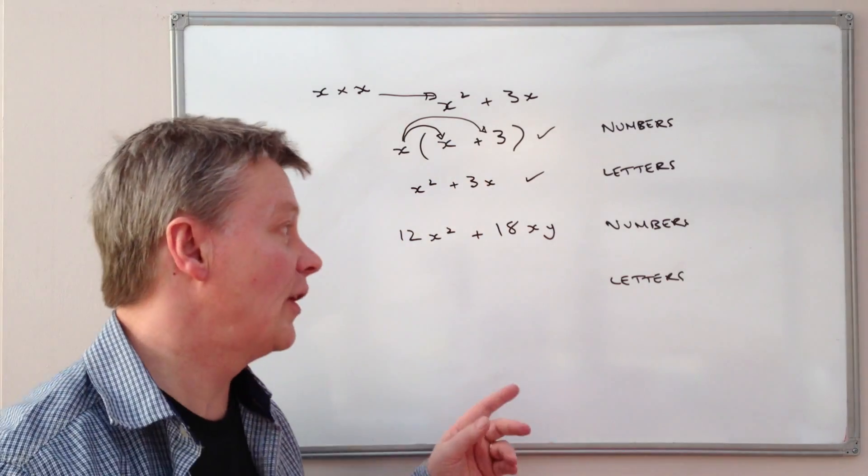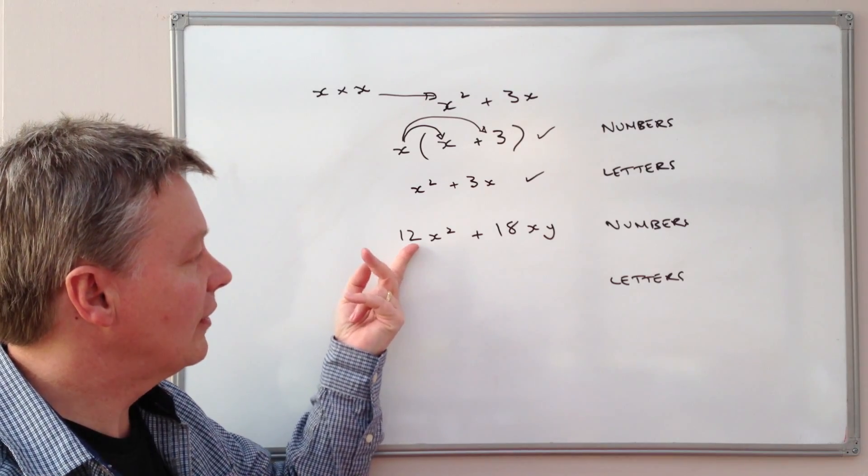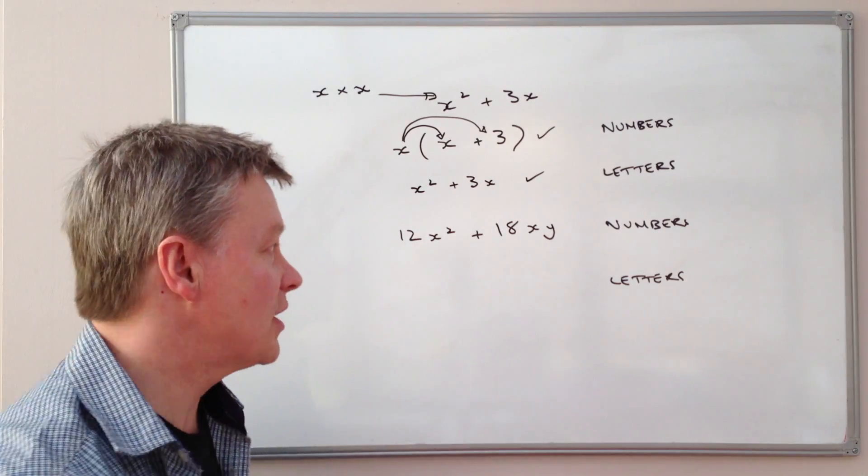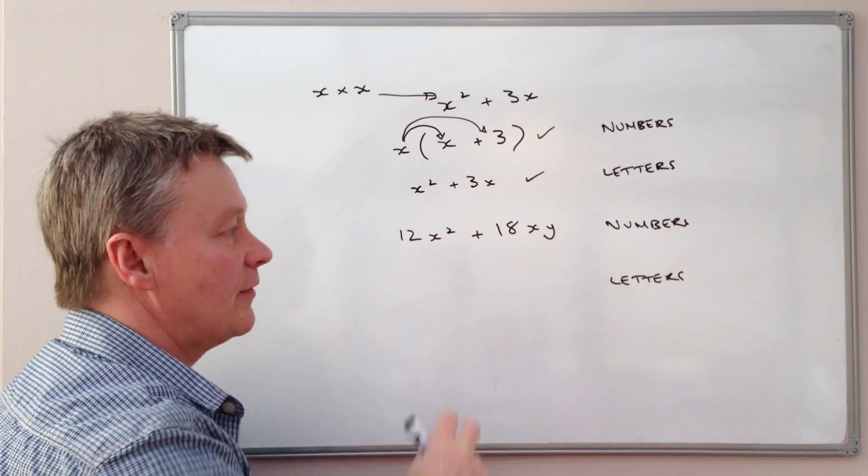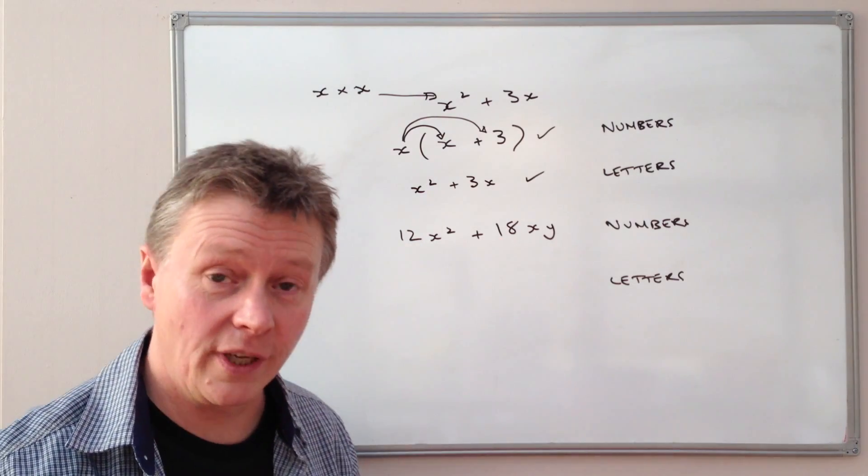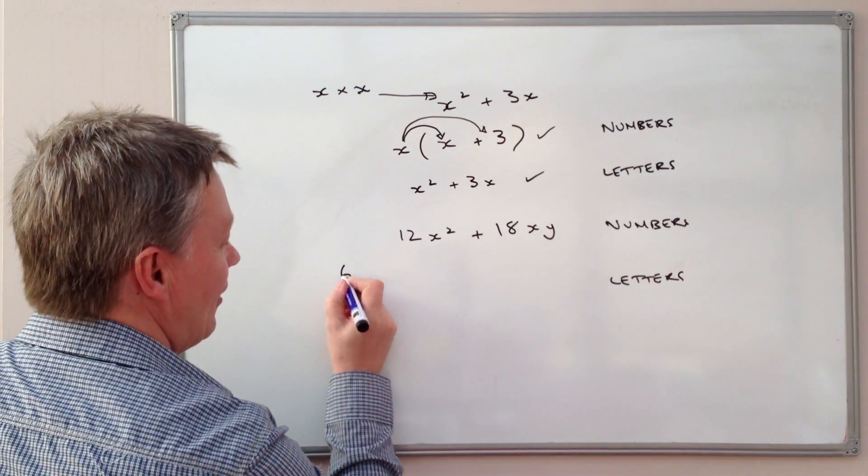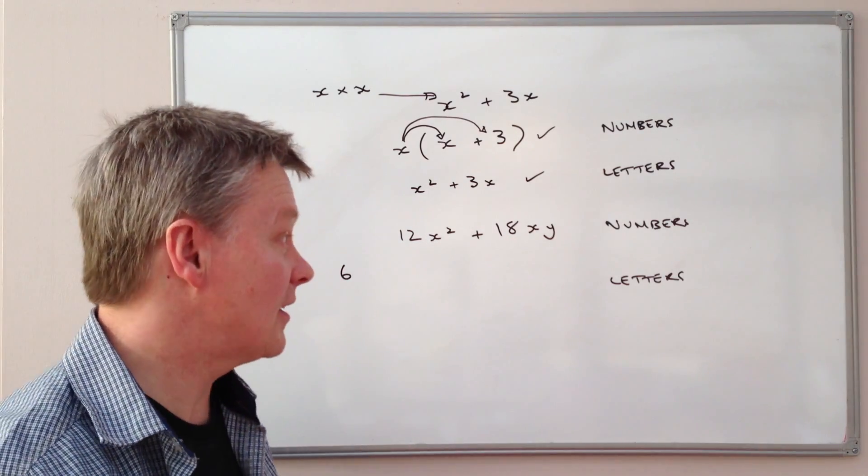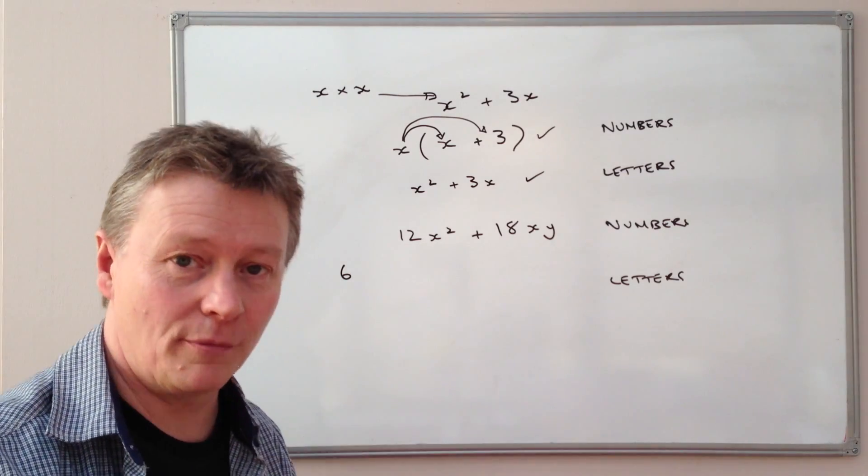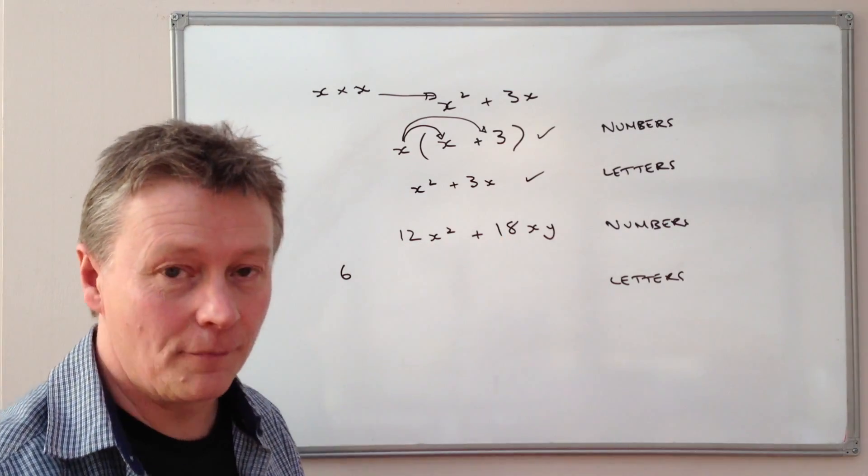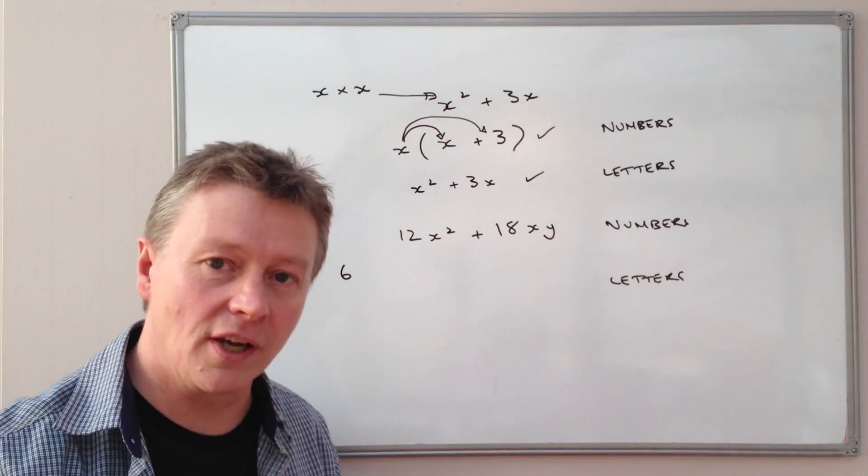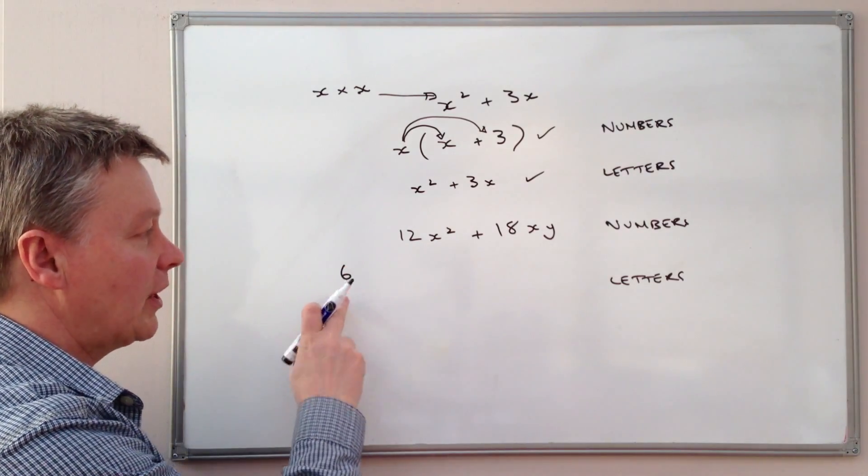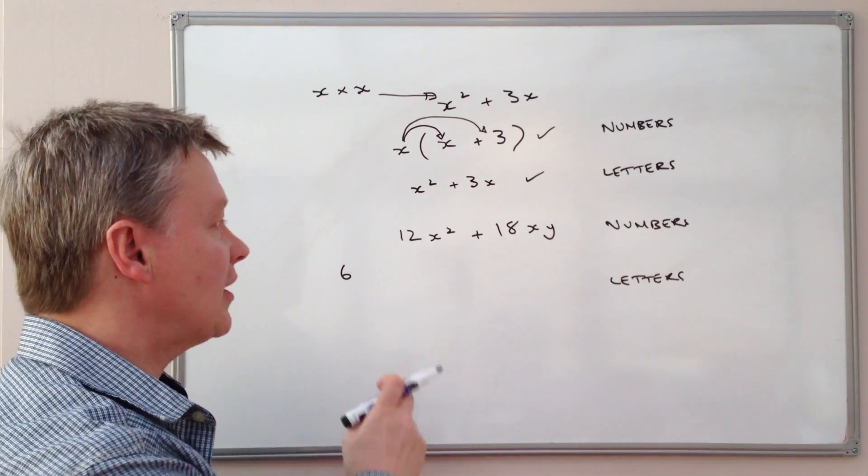So let's have a look at the numbers first. Well, if we look at this number here, I have 12. And this number here, I have 18. So what we're looking for is the highest number which is possible to divide into 12 and divide into 18. And that number would be 6, because 6 times 2 is 12 and 6 times 3 is 18. So 6 is the highest common factor of 12 and 18. If you have a look at mathsrap.co.uk, that will also give you some videos on working out highest common factors of numbers.